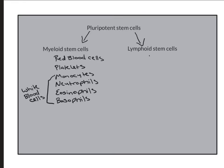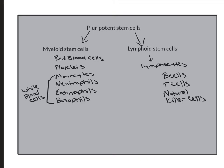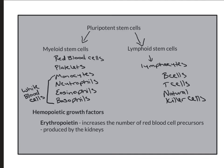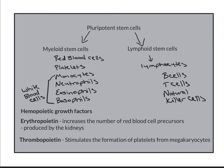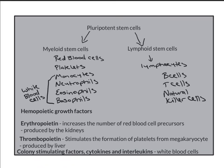The lymphoid stem cells give rise to lymphocytes. These are also white blood cells and include B cells, T cells, and natural killer cells. Hemopoietic growth factors are necessary to regulate the differentiation and proliferation of these different cell types. Erythropoietin increases the number of red blood cell precursors and is produced by the kidneys. Thrombopoietin stimulates the formation of platelets from megakaryocytes and is produced by the liver. Colony stimulating factors, cytokines, and interleukins are all necessary for the differentiation of different white blood cells.